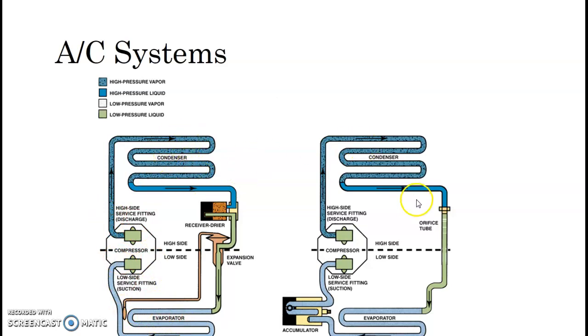Well, the difference between the fixed orifice tube and the thermal expansion valve is the fixed orifice doesn't have a self-metering device. It's just, by definition, a fixed orifice tube. So what happens is it can't adjust for liquid coming out of that evaporator, so it has an accumulator that's going to trap the liquid and only allow that low-pressure vapor to come out to the compressor. So you have your high and a low side of this refrigerant system.